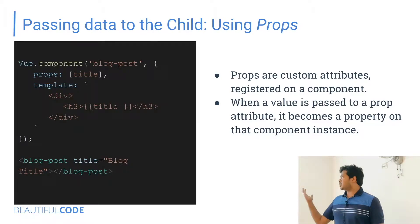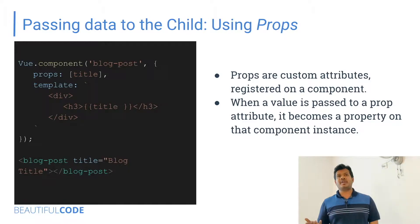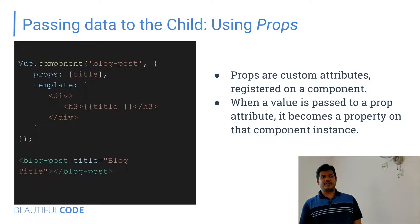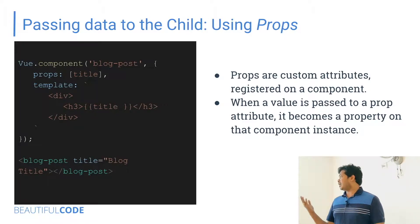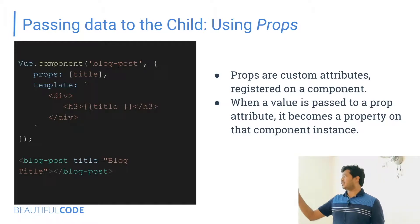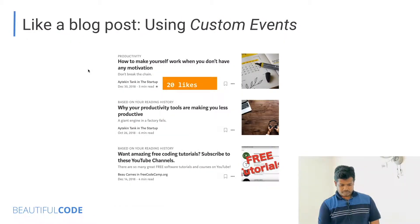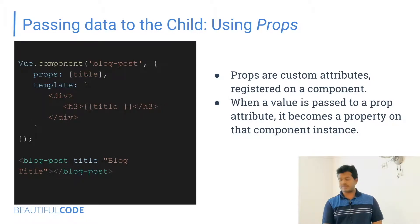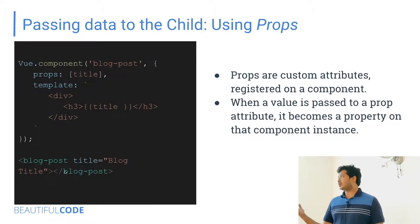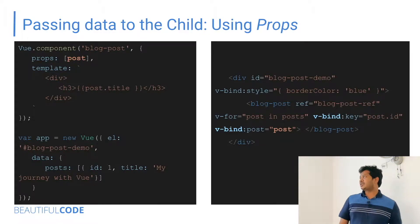Props are custom attributes registered on a component. When a value is passed as a prop, it becomes a property on the child component. Here, a prop called 'title' is expected in the child component, and the blog post component is instantiated with a title string that gets rendered in the child.